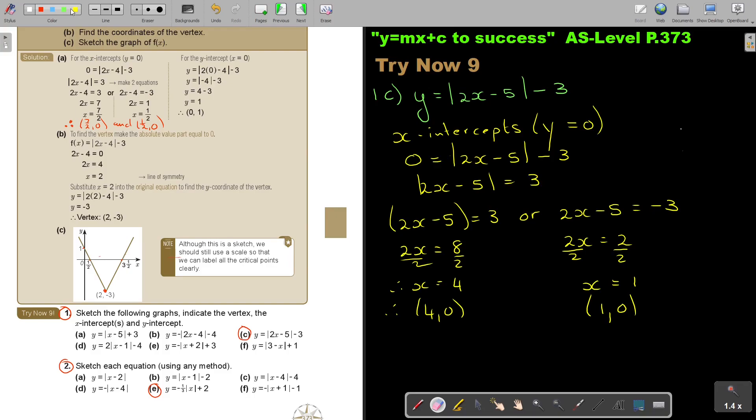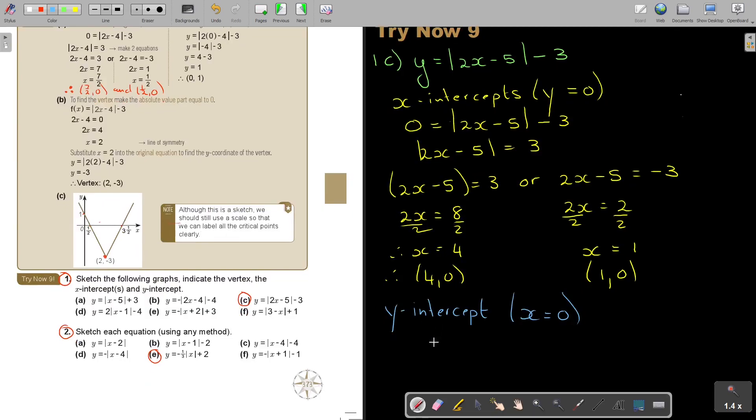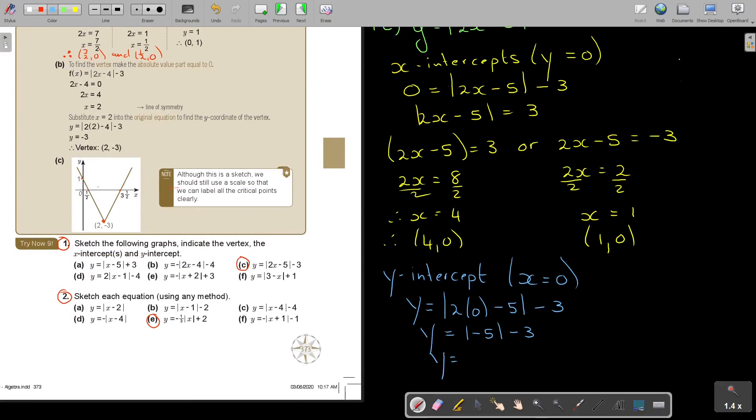Now, the y-intercept. Make x equals to 0. In the place of x, I will put now a 0. Let's first put the bars. So, y is equal to, and there is my negative 5, minus 3. Let's move it up a little bit. The y is equal to 5, minus 3. So, that's 2. So, therefore, it's going to be 0 and 2.